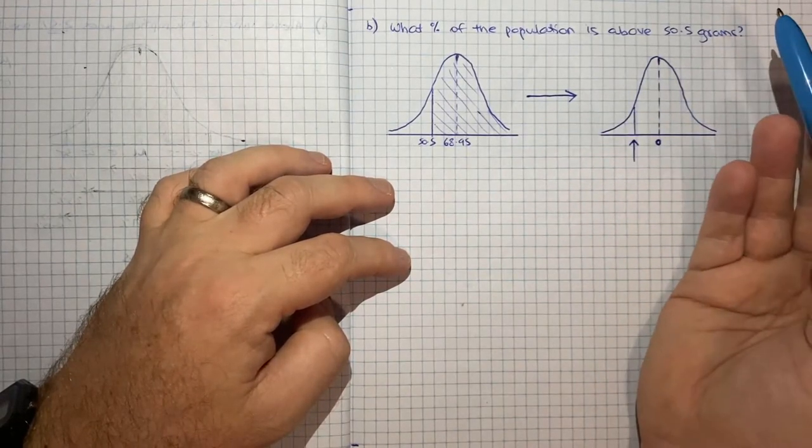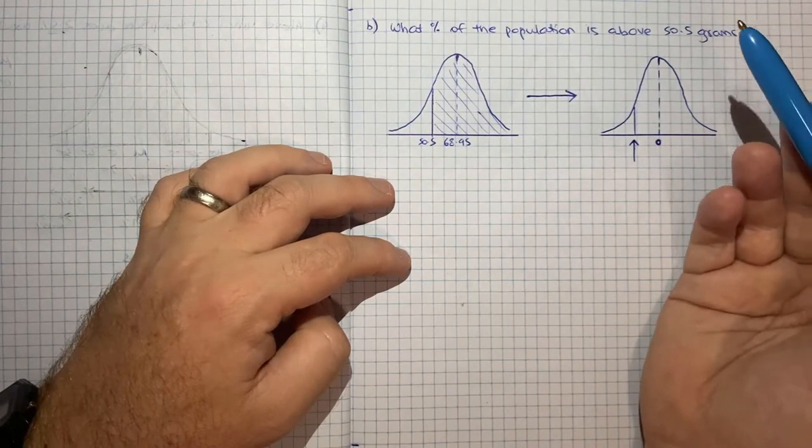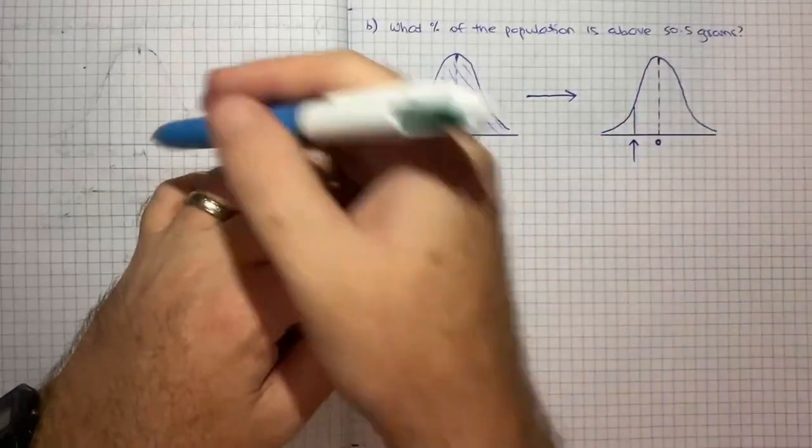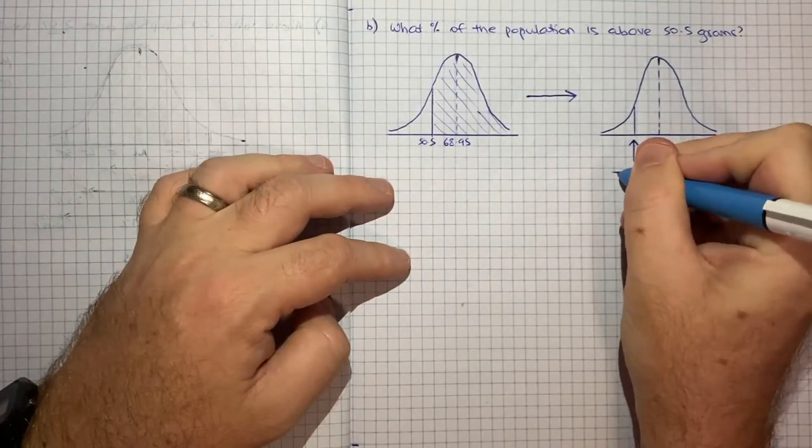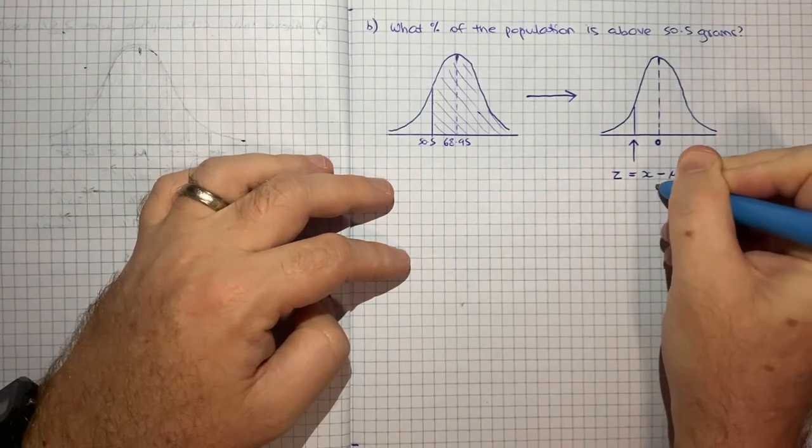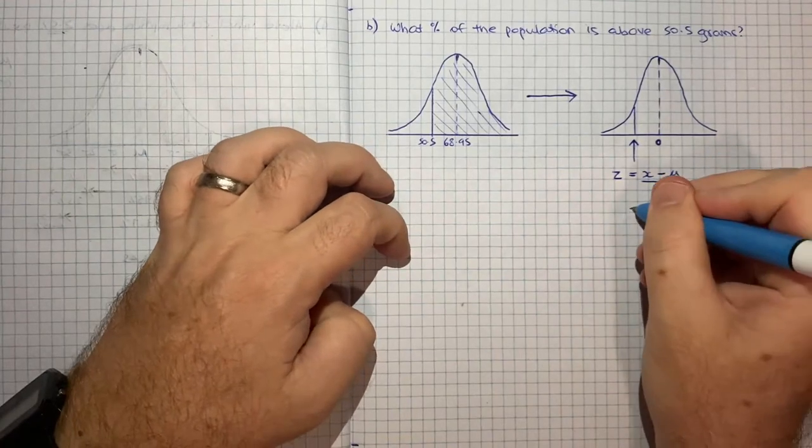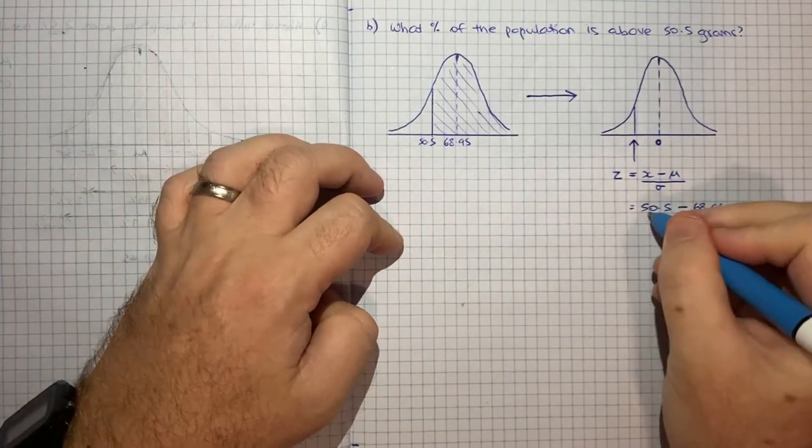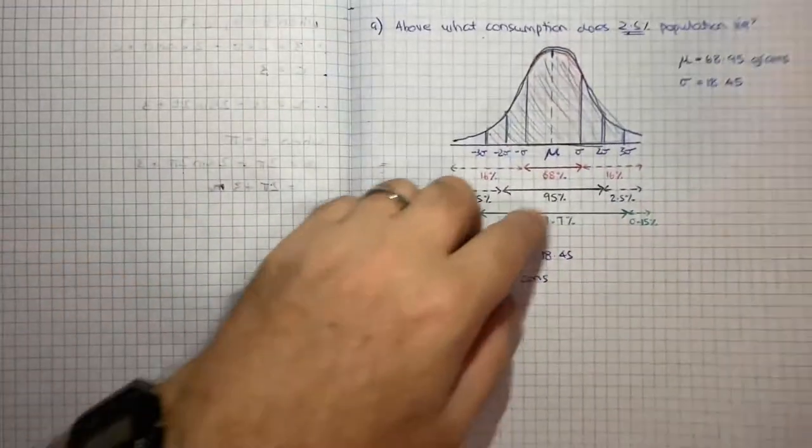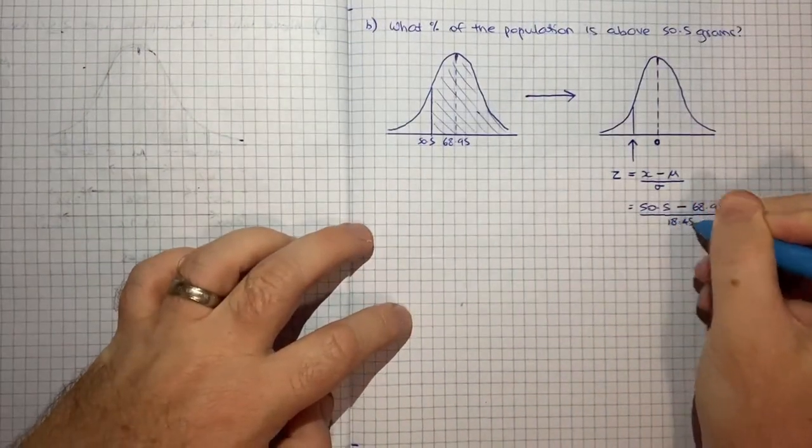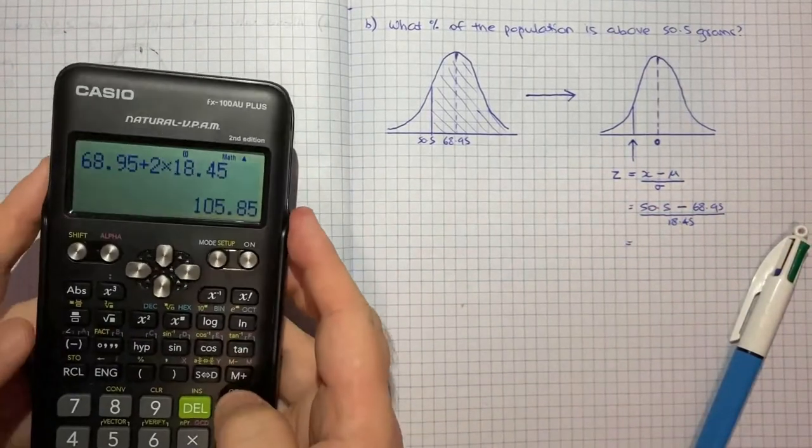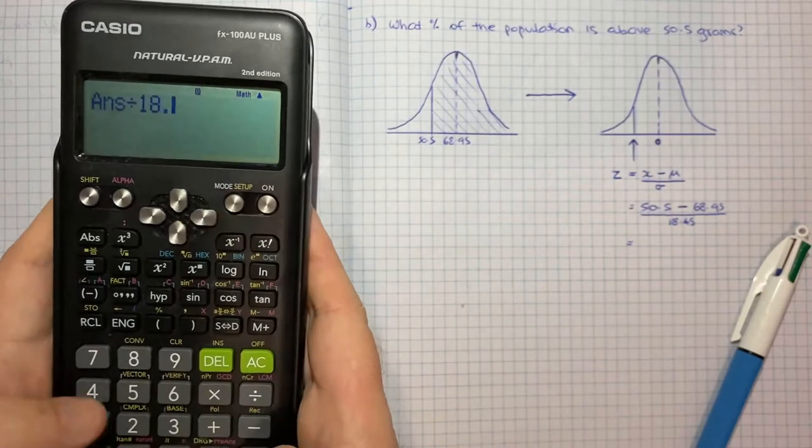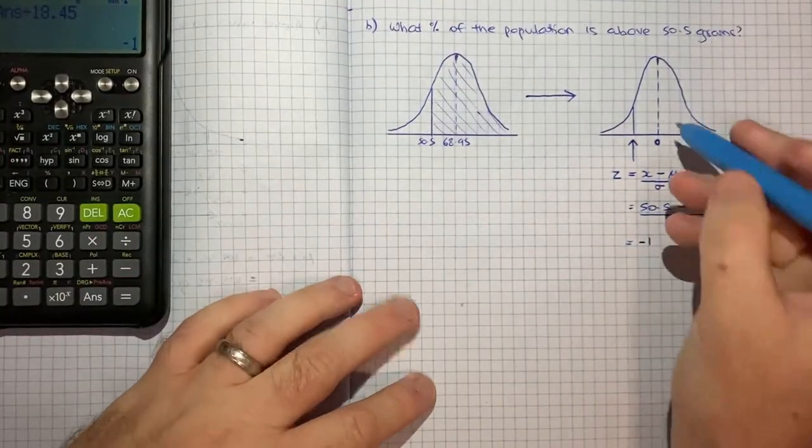Because otherwise you would need Z tables, detailed tables giving you percentages at lots of different points. And you don't get that, you just get this simplified table. So if we think about the Z score, which would be our particular value minus mu on sigma, that's another formula you get given, so you don't have to memorise. In our case, that's 50.5 minus 68.95, all divided by our standard deviation, which is 18.45. So let's key that in, and hopefully we get a standard number. So 50.5 minus 68.95, divided by 18.45, negative one.